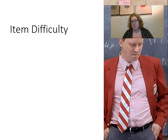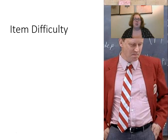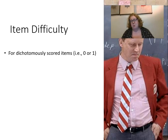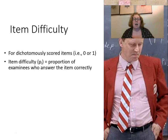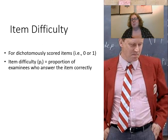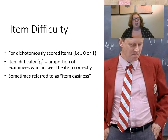Now we're going to talk about the really important stuff: item difficulty. Item difficulty tells us how many students got the item wrong or right on the test. We use it for dichotomously scored items — items you either got wrong or right. We designate it with P sub i, which is the proportion of examinees who got the item correct. The higher the item difficulty value, the easier the item was — I know that's a little backwards. Sometimes we call this item easiness. It ranges from zero to one: zero means no one got it right, one means everyone got it right.